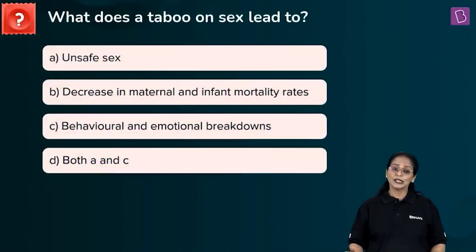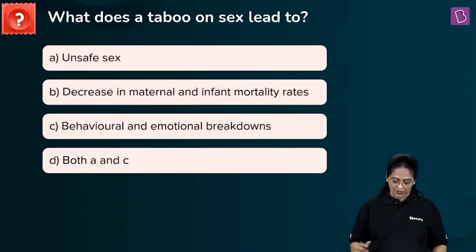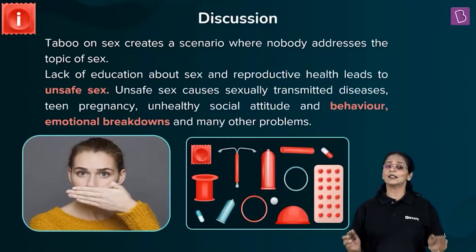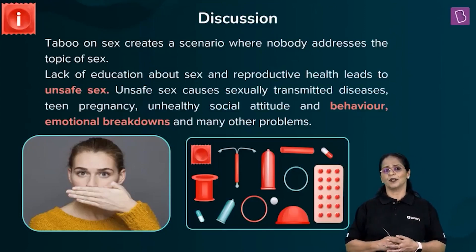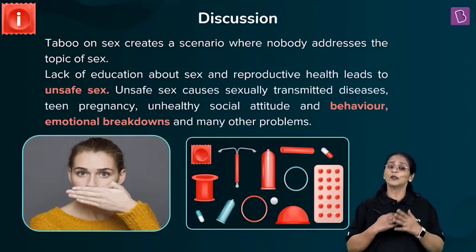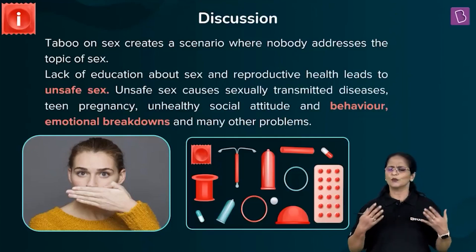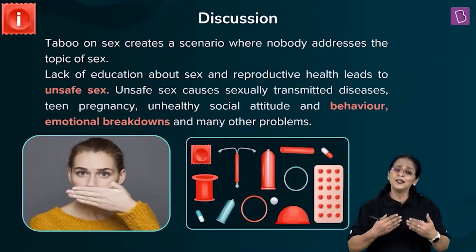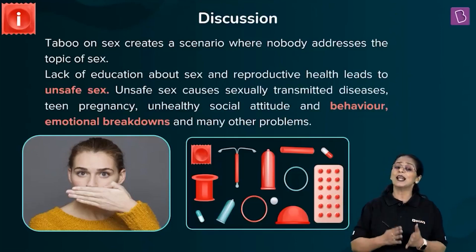A new question: What does a taboo on sex lead to? A. Unsafe sex. B. Decrease in maternal and infant mortality rates. C. Behavioral and emotional breakdowns. D. Both option A and C. Taboo on sex creates a situation where nobody is willing to address the topic of sex — people do not want to openly discuss it. If discussing sex becomes taboo, whether with children, peers, friends, or relatives, where you could comfortably ask questions and clear doubts, if you do not allow that to happen, it can create a lot of problems.